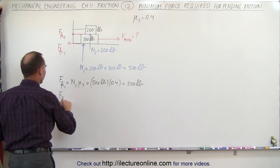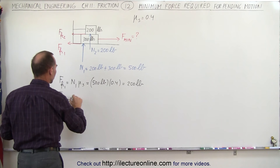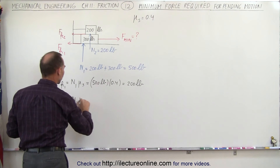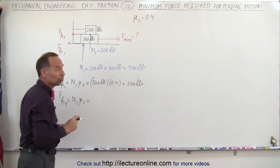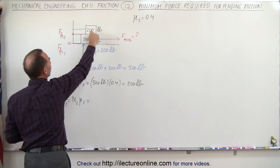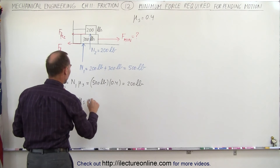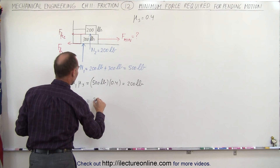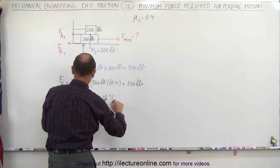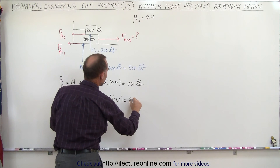Friction force 2 is equal to the normal force between the two blocks times the coefficient of friction, which is the same. We're assuming 0.4 is the coefficient of friction between the two blocks and between the bottom block and the surface. So this is going to be 200 pounds times 0.4, which is 80 pounds.